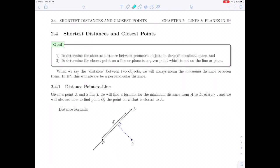Hello and welcome back to the videos for your linear algebra course. In this video we are going to be doing section or starting section 2.4, which is about shortest distances and closest points, and in particular we will do section 2.4.1, the distance from a point to a line.